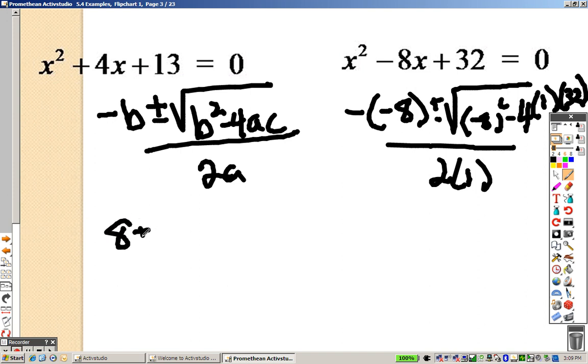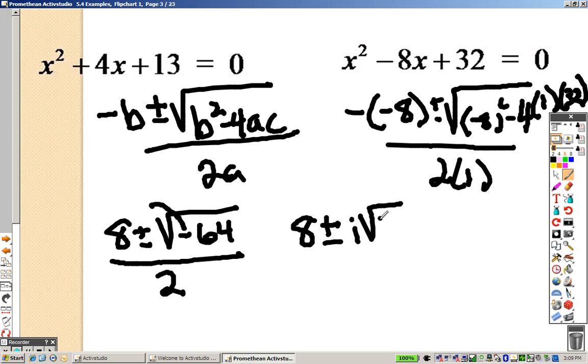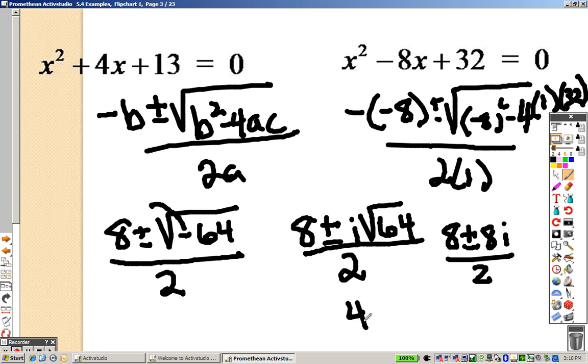So negative negative 8 is 8 plus or minus the square root of negative 64 is what's underneath the root when we multiply and put that all together. And 2 times 1 is 2. So like I told you before, it's like pulling that out and making it a negative. So this is like saying 8 plus or minus i root 64 all over 2. And root 64 is like saying 8. So it's like 8 plus or minus 8i over 2. And I can divide each of those by 2 to get 4 plus or minus 4i as my final answer.